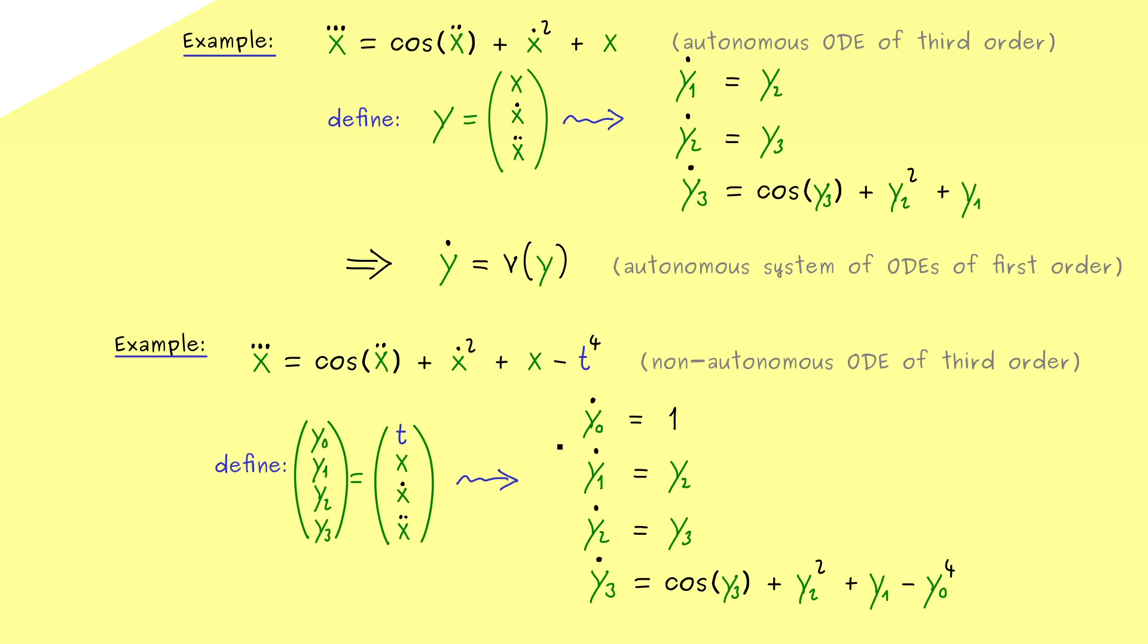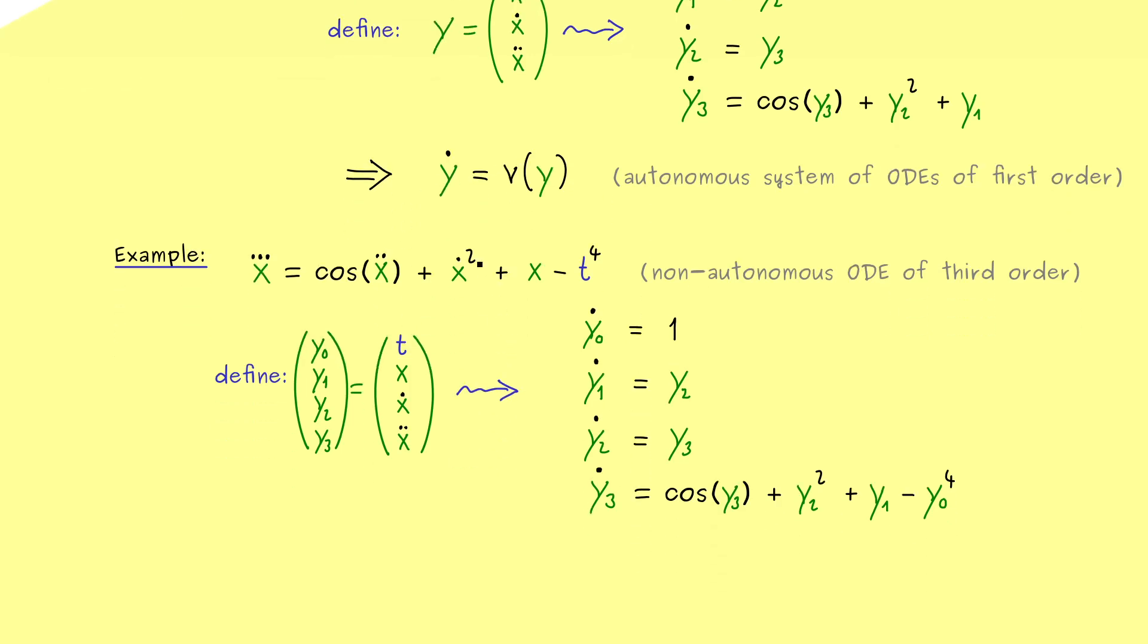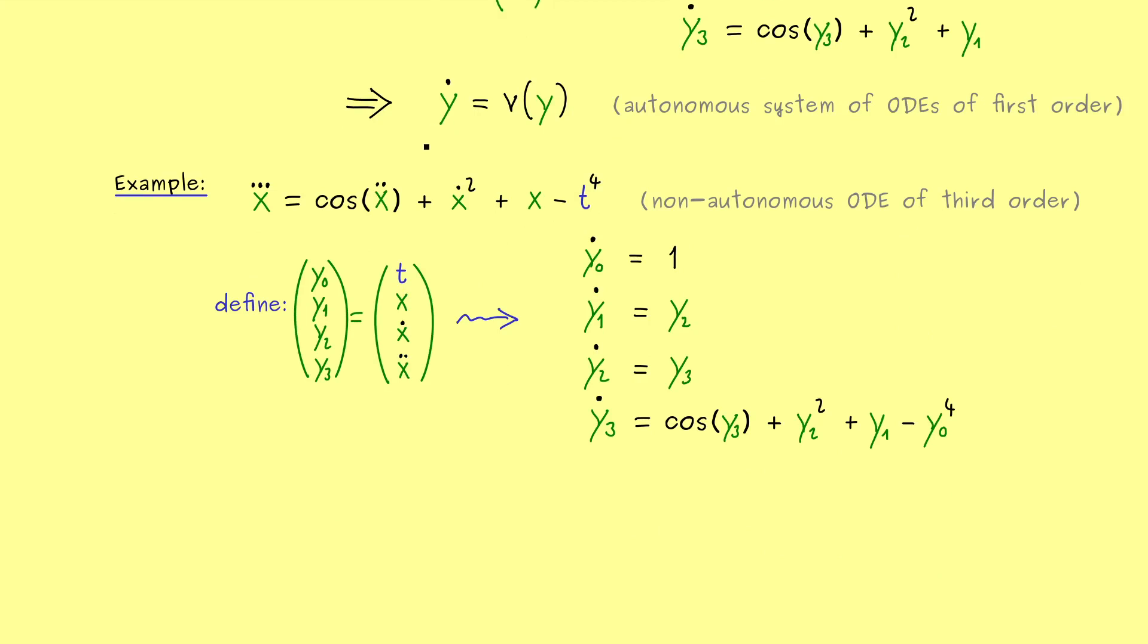Hence in short all ODEs, all explicit ODEs can be described with this formula here. The only thing that might change is the number of components of y. So this is definitely something we should remember, because it explains why in our theory here we only consider this form. So I would say let's write this down in general terms.